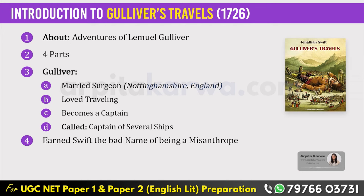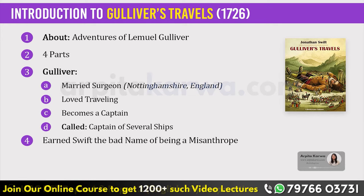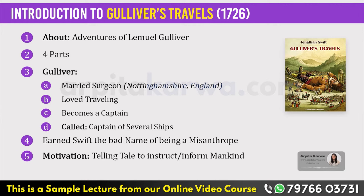There is an important point that needs to be noted: Gulliver's Travels earned Swift the bad name of being a misanthrope. A misanthrope, in simple words, is a person who hates or avoids other people. Despite that, while concluding the work, Gulliver argues that his motivation for telling the tale is to inform and instruct mankind.